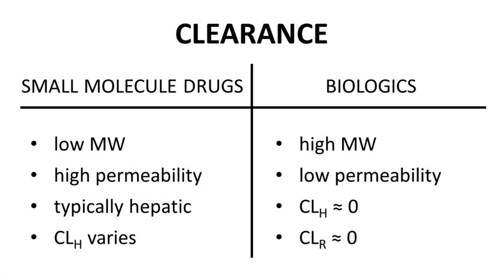In terms of clearance, for small molecule drugs, their permeability allows them to enter hepatocytes, where high concentrations of metabolic enzymes are found. The low molecular weight allows the compounds to fit into the active site of different metabolic enzymes. Clearance varies, but the main mode of clearance for small molecule oral drugs is in the liver — hepatic clearance.